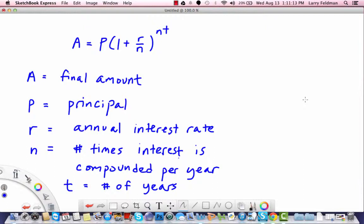In this video, I want to focus on the equation that is on the screen. A equals P times the quantity 1 plus R over N, all raised to the nt. As you can see, there are a lot of variables here, so let's go through them.